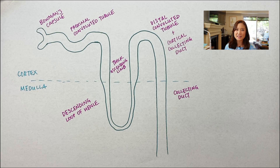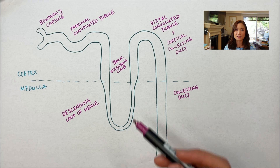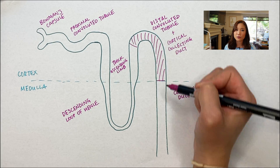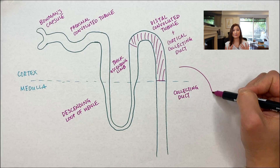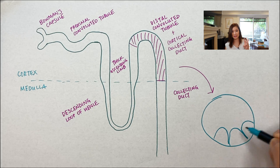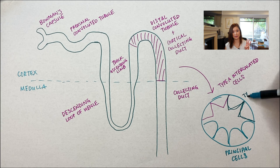Most potassium regulation — meaning adjustment of the concentration of potassium in the blood — is actually happening in the late distal convoluted tubule and the cortical collecting duct, which is the portion of the collecting duct in the renal cortex. In this section of the nephron, potassium is both secreted and reabsorbed, so this is where the body can really adjust how much potassium we lose in the urine. This segment contains three different types of cells: the principal cell, the type A intercalated cells, and the type B intercalated cells.